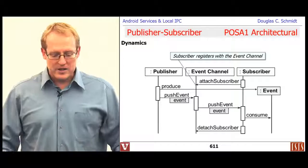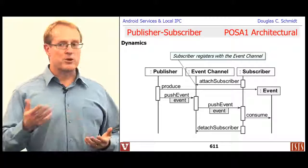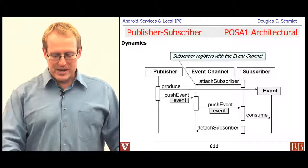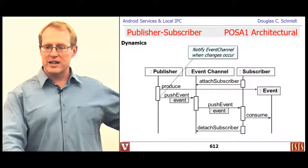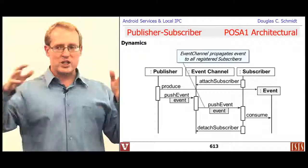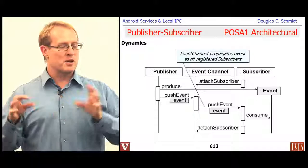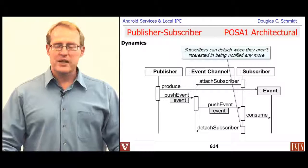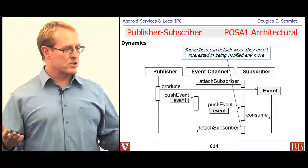Here's a quick summary of the dynamic interactions. It starts with subscribers registering with the event channel — some systems require publishers to register too, but subscriber registration is almost always required. When the publisher detects something changed that others may care about, it publishes the event to the event channel. The event channel checks which subscribers care about this type of event — maybe all, maybe some, maybe a quorum — and those things get pushed along and delivered to the actual subscribers who consume the event.